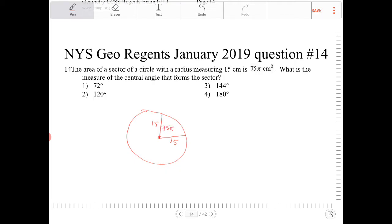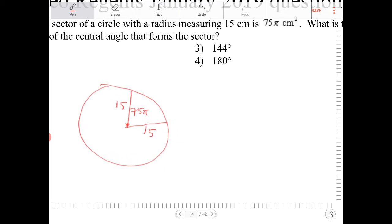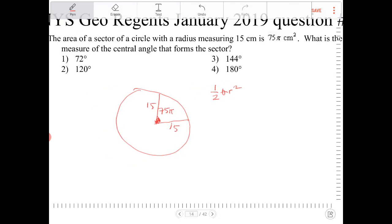What is the measure of the central angle that forms the sector? I understand that the area of a sector formula is one-half theta r squared where theta is in radians, and all the answer choices are in degrees. So I'm going to have to work backwards after I solve for theta. I want to convert that angle measure back into degrees.